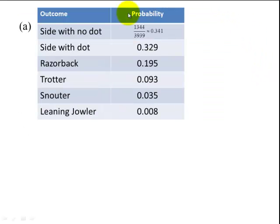We'll begin with Part A. We take the frequency and divide it by the total number of observations and we get 0.341. We do that for each of the outcomes.